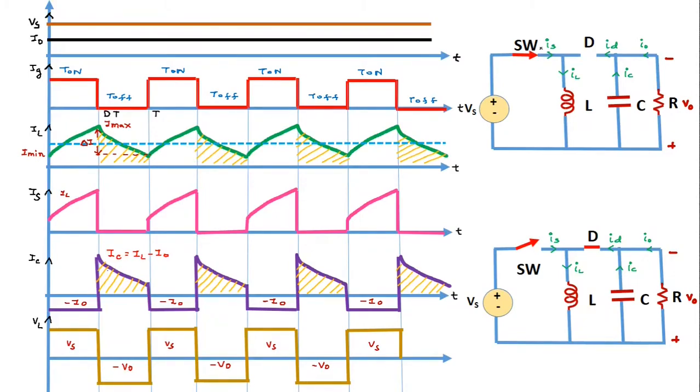This is the circuit diagram of the buck boost converter, which consists of a DC voltage source, a switch SW implemented by an IGBT or power MOSFET, an inductor L, a diode D, a capacitor C, and a load resistance R.